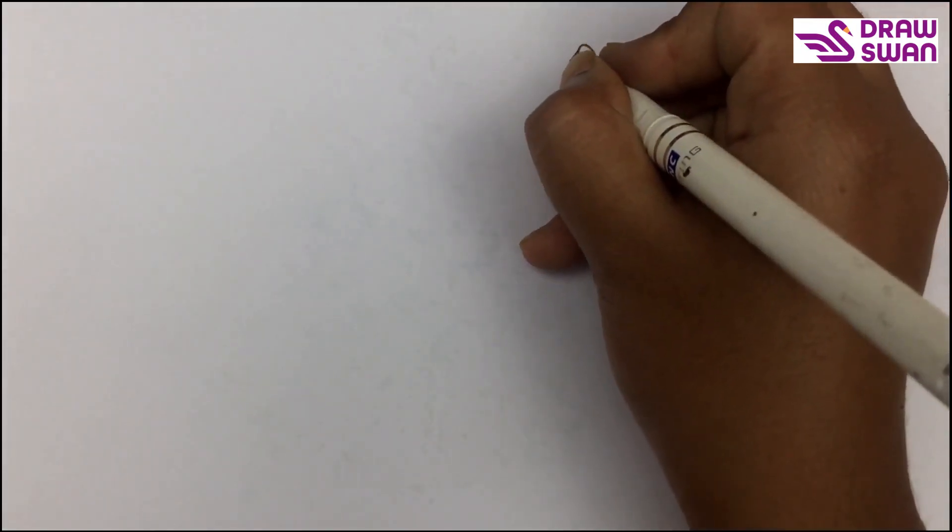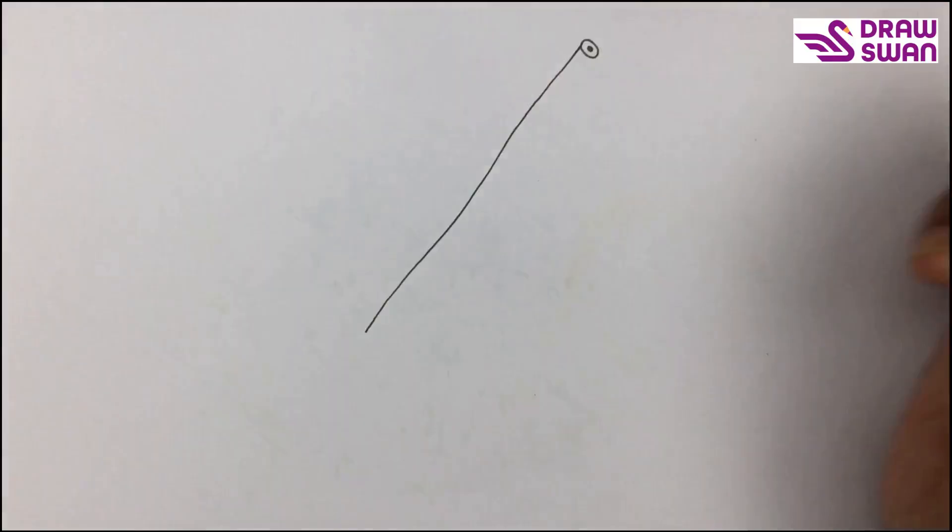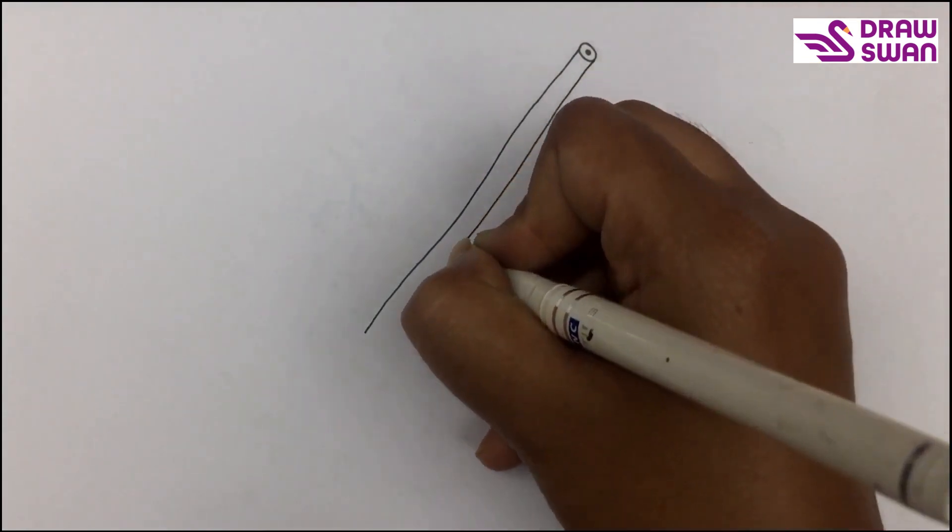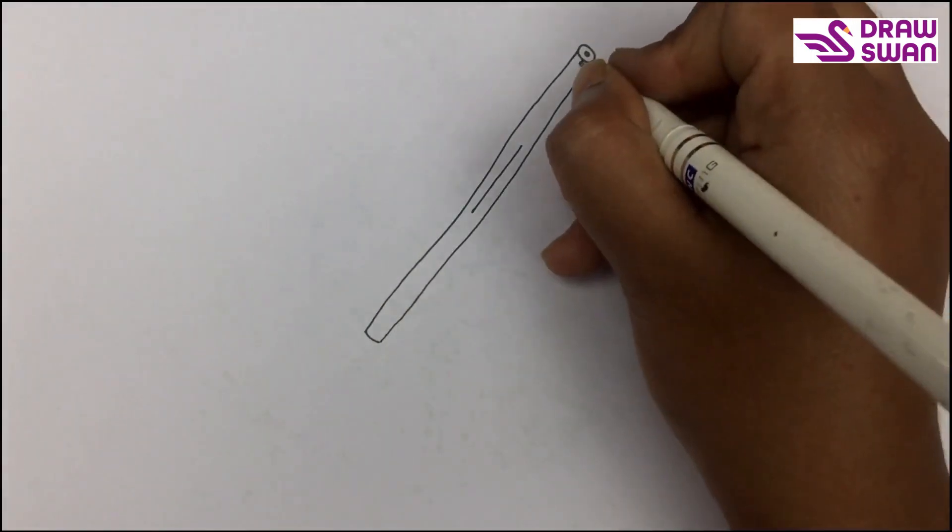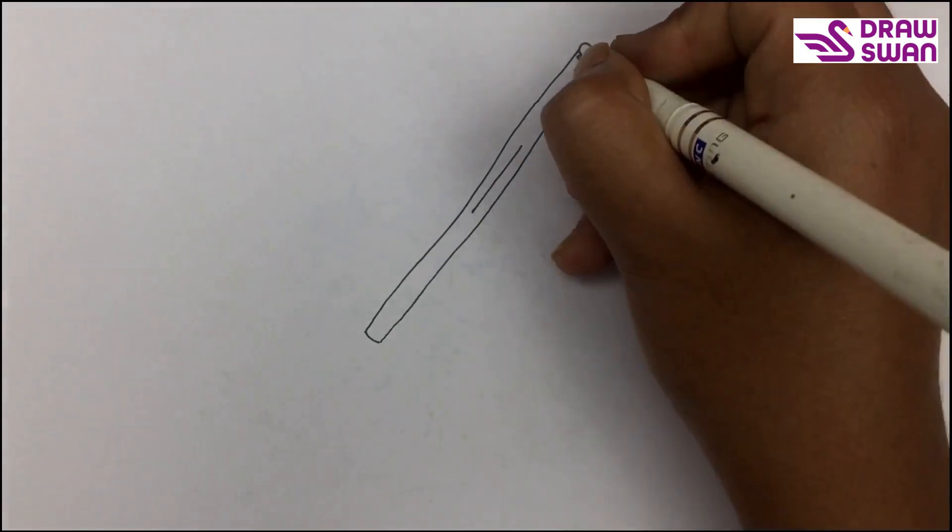Draw a little dot inside the circle and now draw two big lines. Let's join them. Okay, here's some texture of wood.